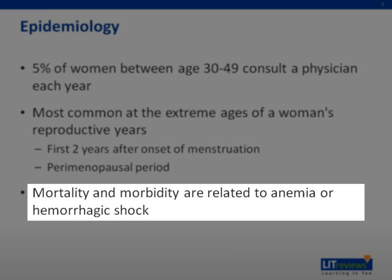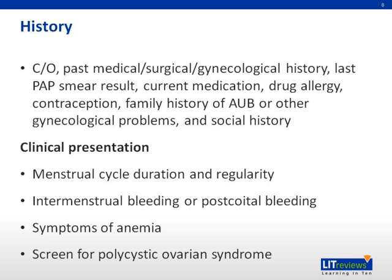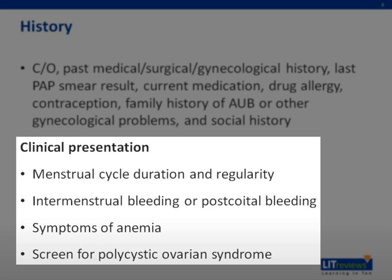Mortality and morbidity are related to blood loss. Patients can present with signs of anemia or hemorrhagic shock. Complete a thorough gynecological history. Patients with DUB may present with irregular menstrual cycles, with menstruation lasting longer than seven days in less than 28-day or greater than 35-day cycles. The time between each menstrual cycle is variable. Intermenstrual bleeding is common. There may be spotting, heavy bleeding, or clots. Ask whether the intermenstrual bleeding correlates with the time of ovulation.